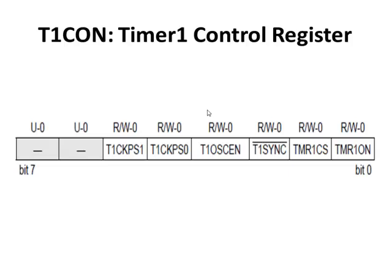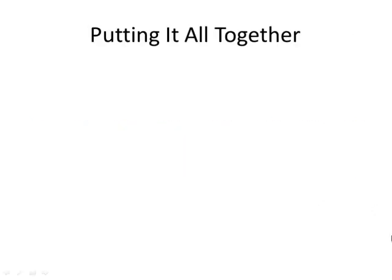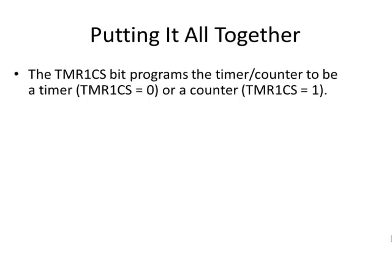Here's the Timer 1 control register. Notice there are only 6 bits — much easier than the analog-to-digital converter which had two full 8-bit registers. Bits 5 and 4 are the clock prescaler, giving options of divide by 1, 2, 4, or 8 with bit combinations 00, 01, 10, or 11. Two bits we won't concern ourselves with — leave them as zeros; consult the PIC manual if you want details. The Timer 1 CS bit defines whether it's a timer or a counter, and the Timer 1 ON bit turns the timer on or off. The Timer 1 CS bit programs it to be a timer if it's a 0, or a counter if it's a 1.